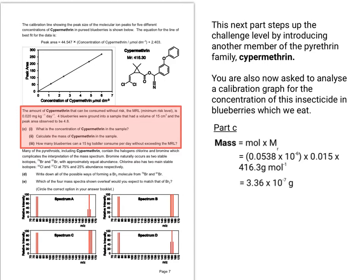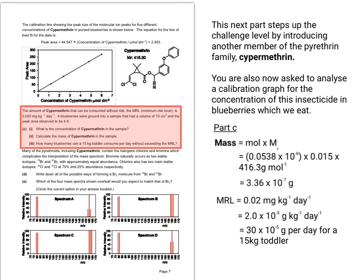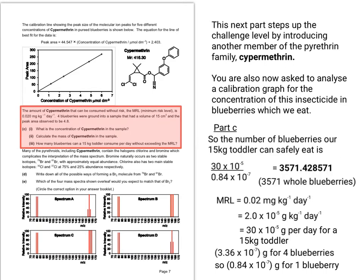The next part asks how many blueberries a 15 kilogram toddler can consume per day without exceeding the MRL. The minimum risk level is about 0.02 milligrams per kilogram of body weight per day. Converting to grams gives 2 × 10⁻⁵ g per kg per day, which is 30 × 10⁻⁵ g per day for a 15 kg toddler. Since there are 4 blueberries in the sample, there is 0.84 × 10⁻⁷ g of cypermethrin per blueberry, giving 3,571 whole blueberries.